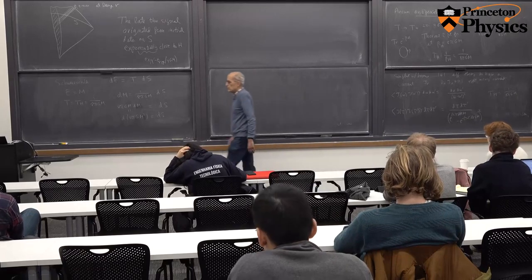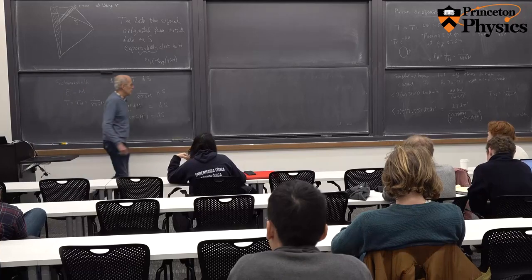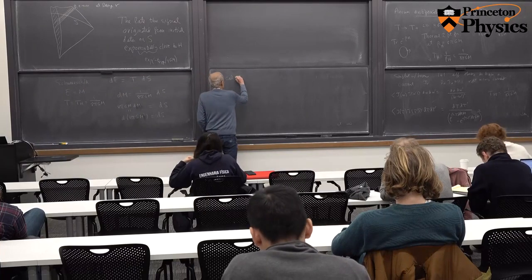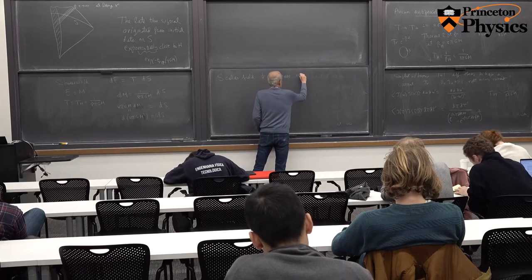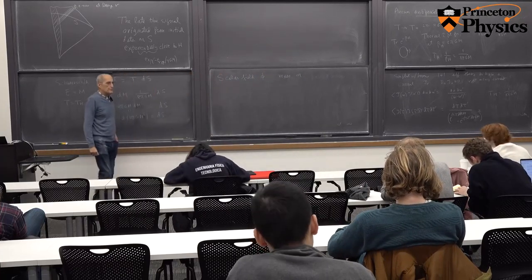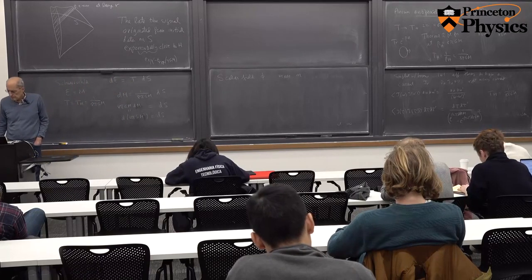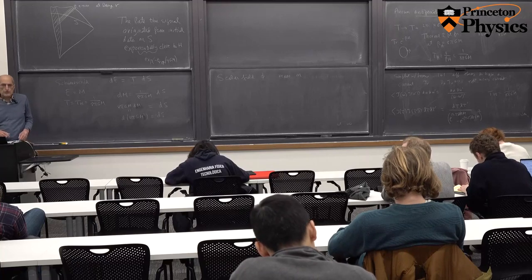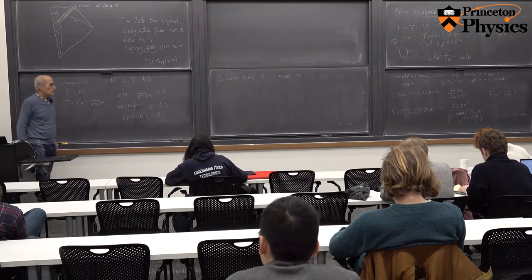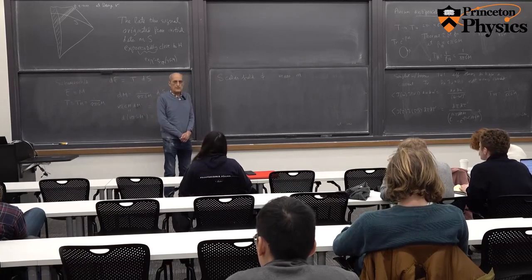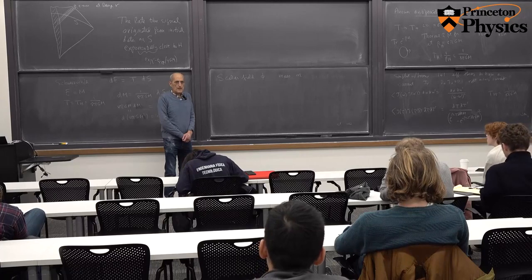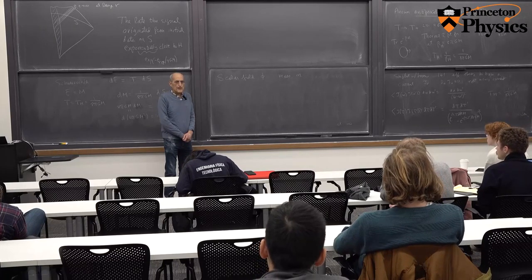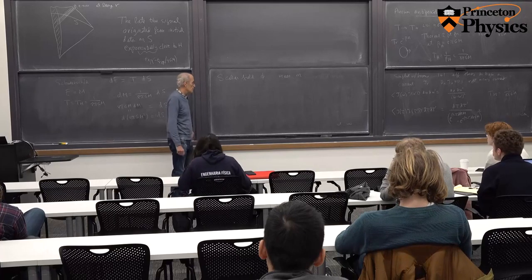We do the more realistic calculation for a scalar field phi with mass M — carrying the calculation as far as possible with general M, then eventually setting M to zero or assuming M is very small. We use a scalar field because it makes the partial wave expansion simple, using ordinary spherical harmonics rather than vector spherical harmonics.